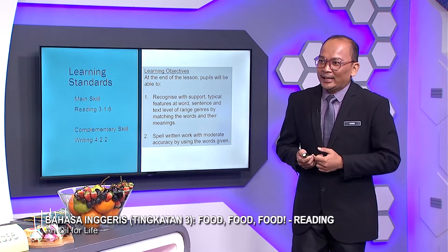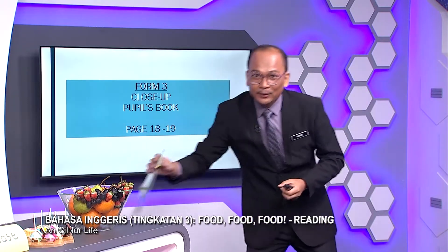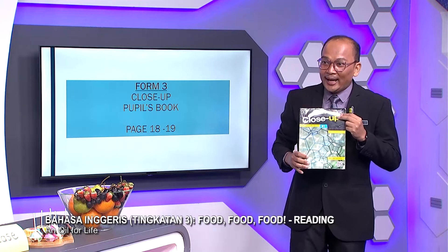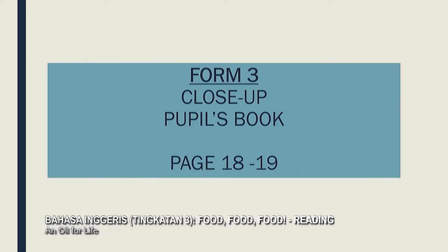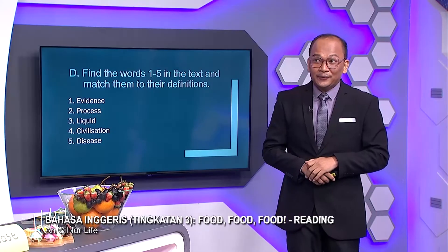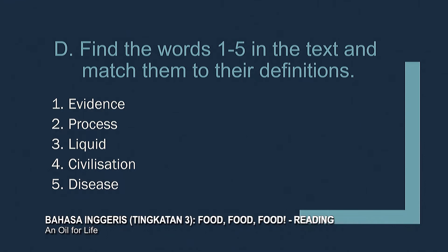All right, let's continue. We are going to use our Form 3 textbook — our pupils at home can always refer to their textbook. This is the pupils' book and we are going to focus on pages 18 and 19. For those at home, you can open your textbooks to pages 18 and 19. We are going to start with our first activity: find the words numbered one to five in the text and match them to their definitions. The words are: evidence, process, liquid, civilization, and disease.